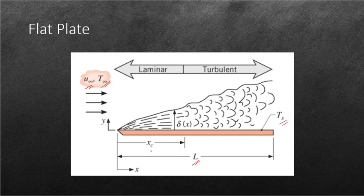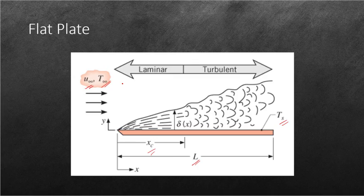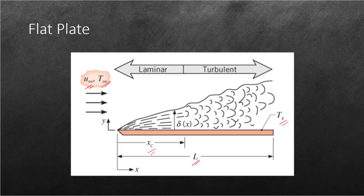We also have our critical length which is denoted by X sub C, and here we are going to categorize our flow also by laminar and turbulent. From our fluid mechanics class, we know that laminar is when flow is smooth and the layers flow smoothly on top of each other, and turbulent flow is when there is eddies forming, the boundary layer is unstable.